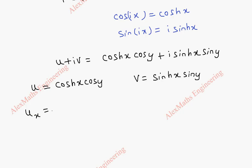Now, let's find the partial derivative of u with respect to x. So, cosh x is sinh x. Cos y is constant. It stays as it is. And partial derivative of u with respect to y, cosh x is constant, which is written as it is. And cos y derivative is minus sin y. And let's take the minus sign here.